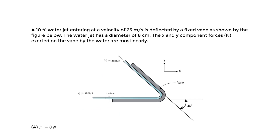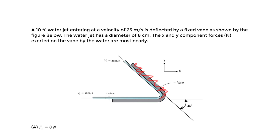Let's solve an FE type question using the impulse momentum principle. We have a 10 degrees Celsius water jet entering at a velocity of 25 meters per second, deflected by a fixed vane as shown in the figure. The jet enters at 25 meters per second, and the fixed vane serves to deflect this jet.